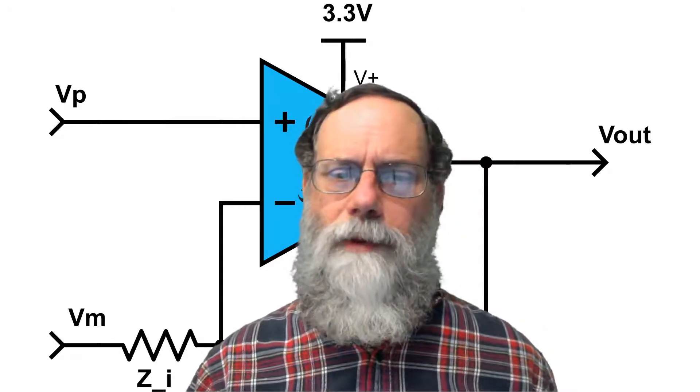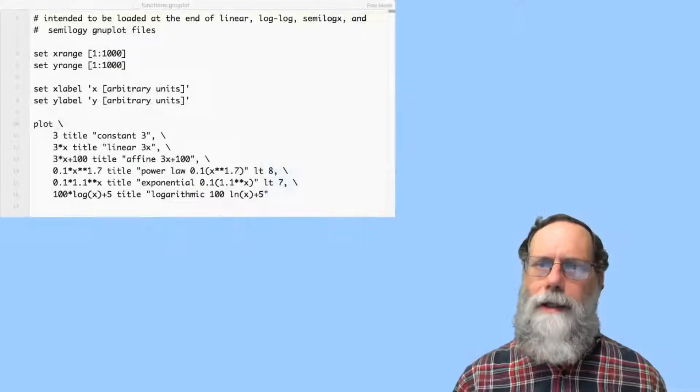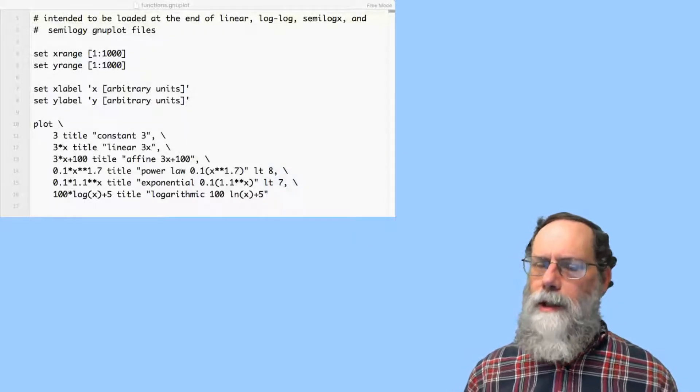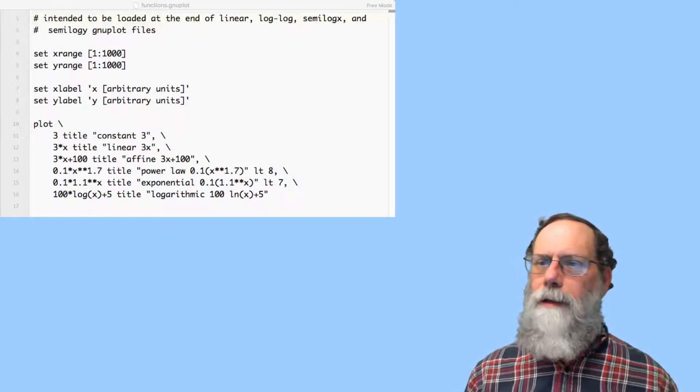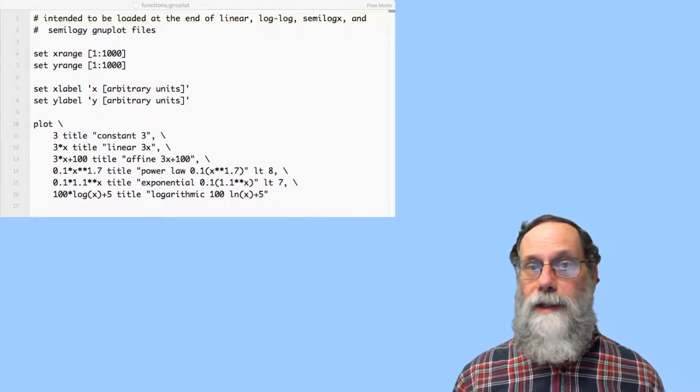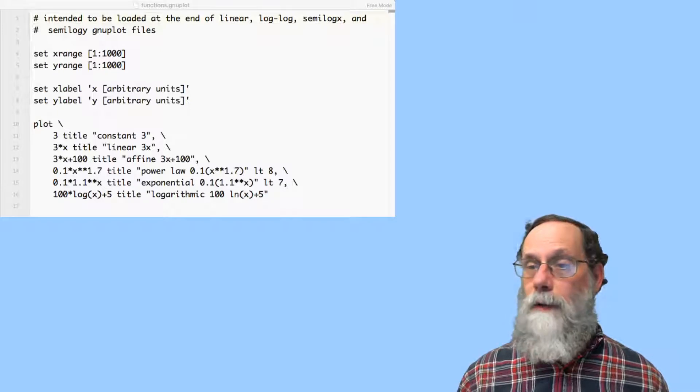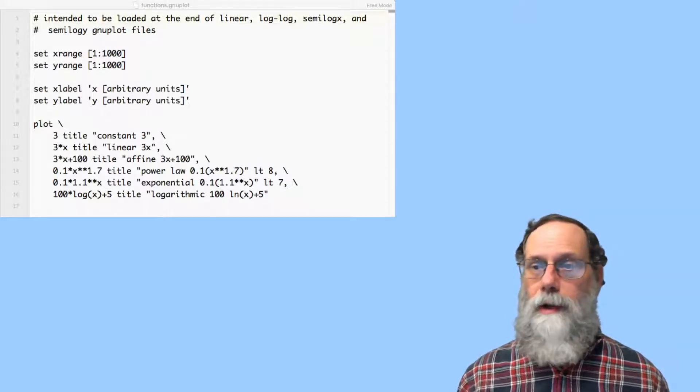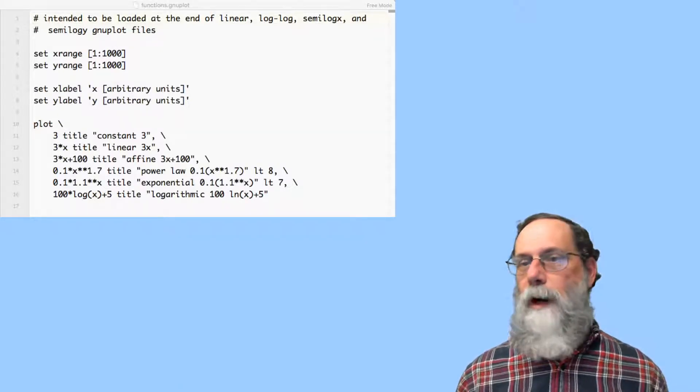Let's take a look at some functions that we might have in mind here. I'm doing this in gnuplot. So this is a little bit of a gnuplot script. And first things I do is set the x range and the y range to be 1 to 1000. This is just an arbitrary range. I'm going to do some arbitrary functions here.